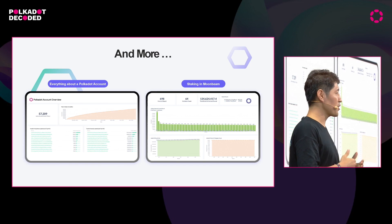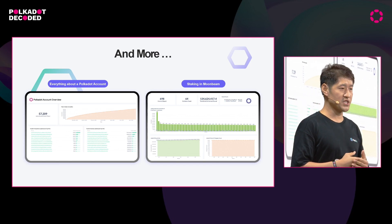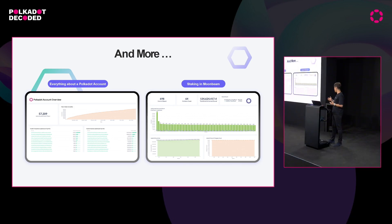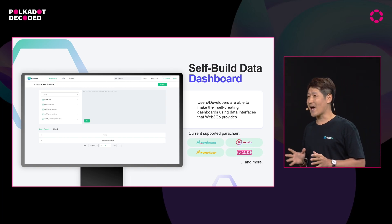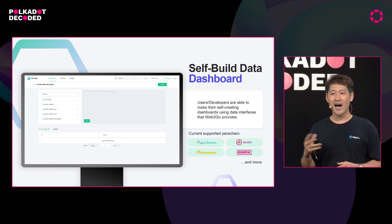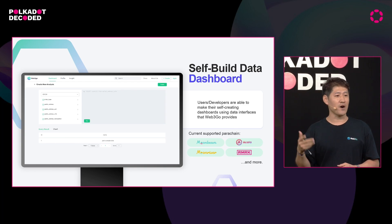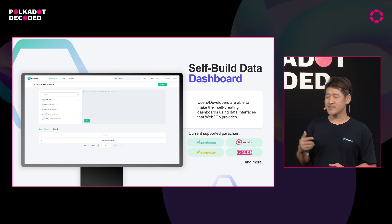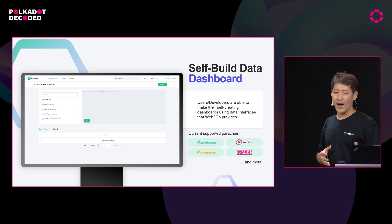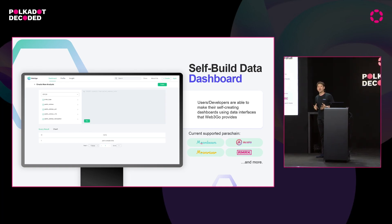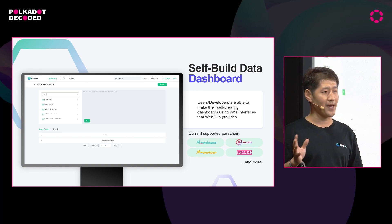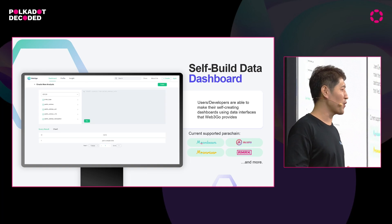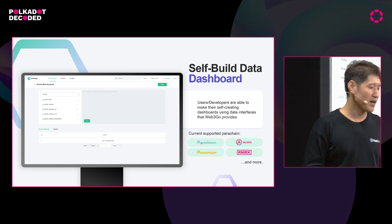We have really developed the most important parts for information happening in Polkadot — for example, staking on Moonbeam. Now you may ask: you have already developed so many nice dashboards, but data is unlimited — there are so many data points in Polkadot, how do you have the capacity to develop thousands of different dashboards? Our solution is we provide these interfaces for normal users and developers to create their own dashboards, which can later be shared with the community. If someone says they need something more interesting, they can create their own dashboard and share it with the community.